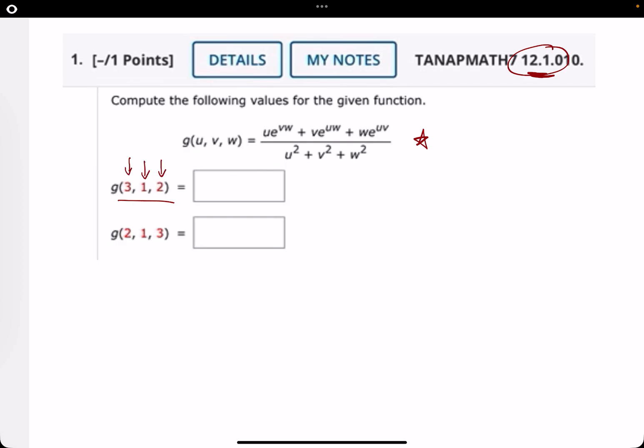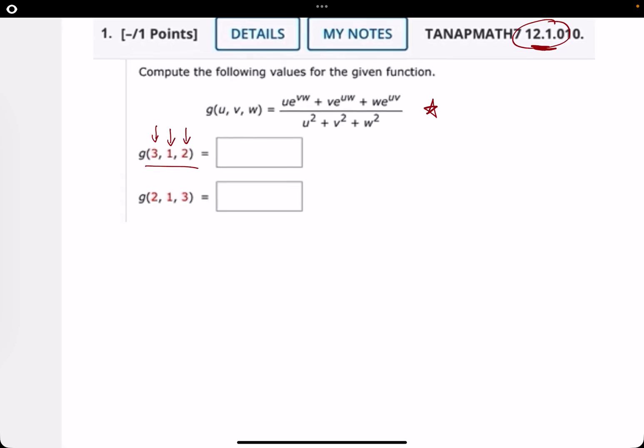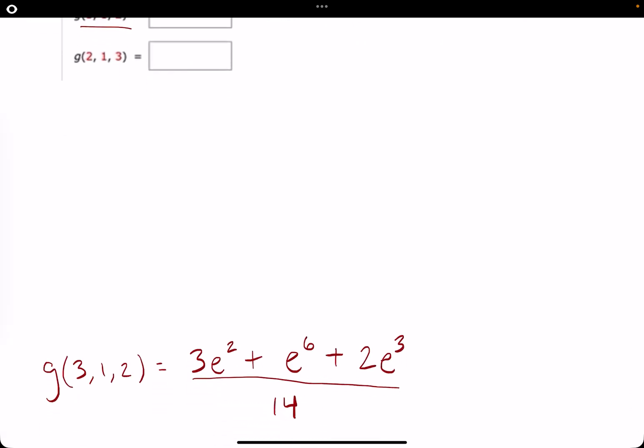So you'll just plug in 3 for u, 1 for v, and 2 for w. When we do so, we get this here.